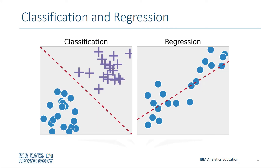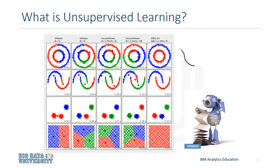There are two types of supervised learning: classification and regression. Since we know the meaning of supervised learning, what do you think unsupervised learning means? Unsupervised learning is exactly as it sounds — we do not supervise the model, but we let the model work on its own to discover information that may not be visible to the human eye.